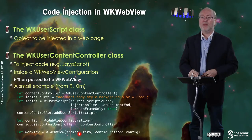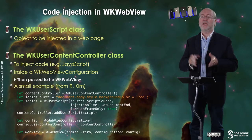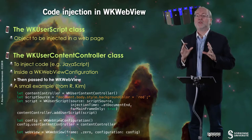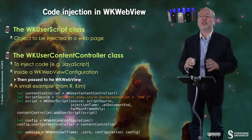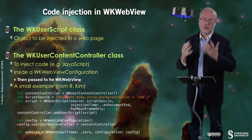By the way, CGRect.zero is a frame with origin (0,0) and zero width and height. This is a typical code pattern showing how you inject code into your WK WebView. You can also do this dynamically — not only when loading — you can enrich your view dynamically at any point.